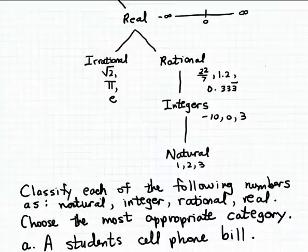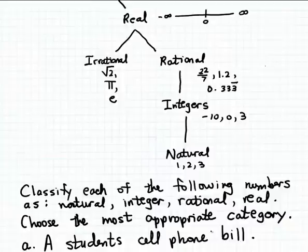In this example we're going to consider some measurable quantities, and what we want to do is classify the number that we would use to measure each quantity as either a natural number, an integer, a rational number, or just a real number. We want to choose one category for each quantity.